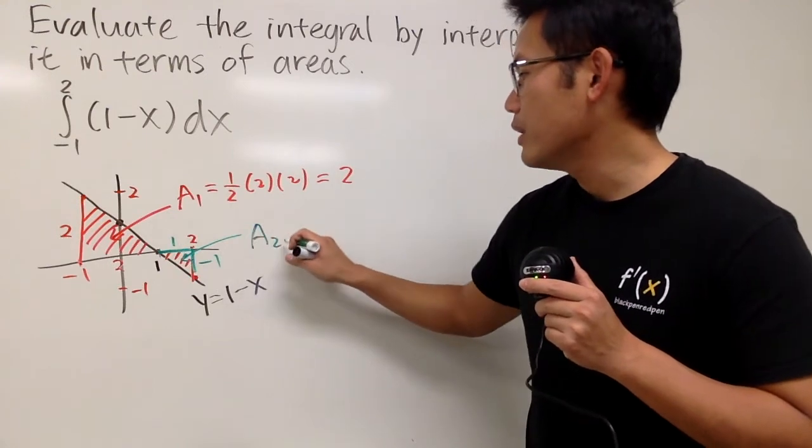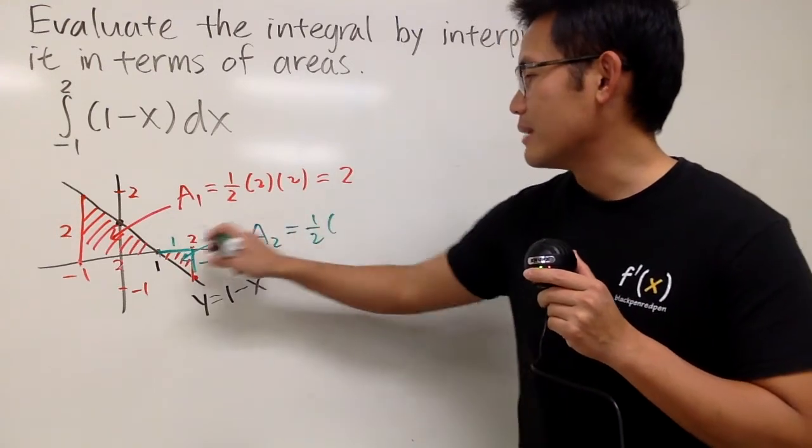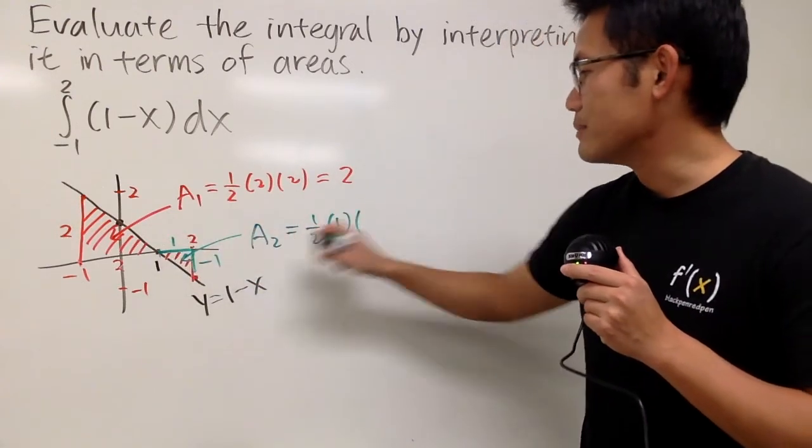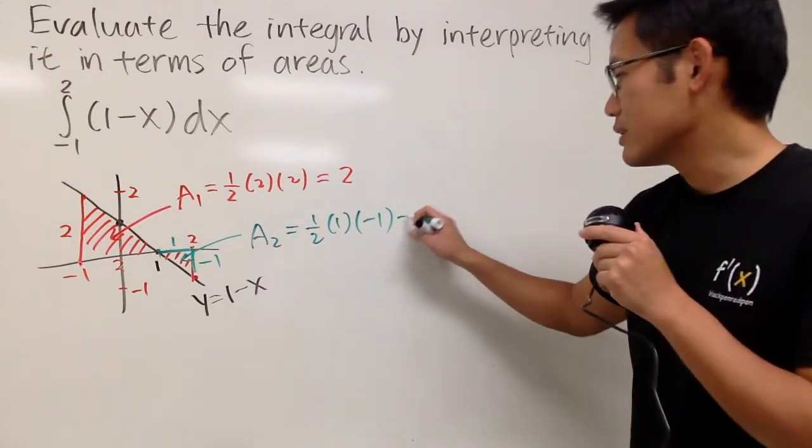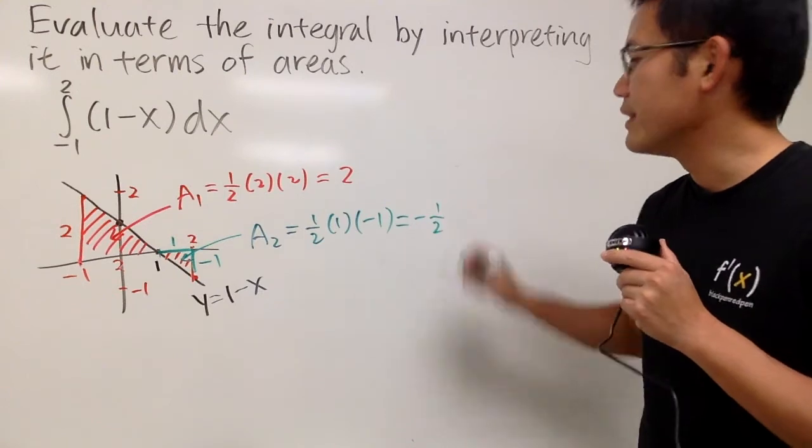I'll just call that to be A2, and you get 1 half times the base, which is 1, times negative 1 for the height. So that's pretty much the idea. And work this out, we get negative 1 half.